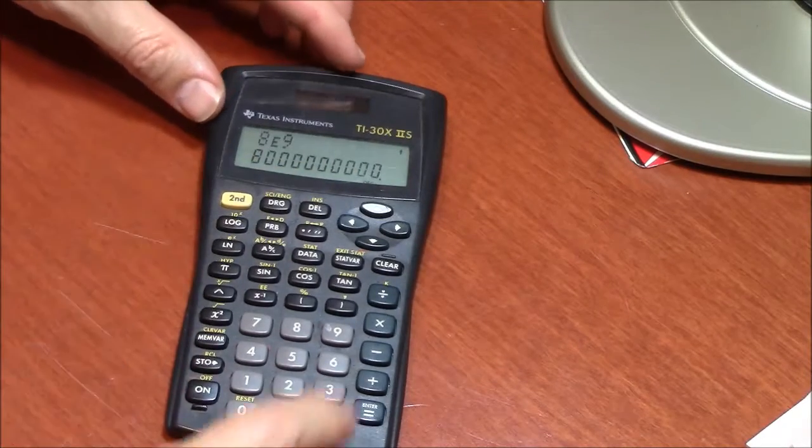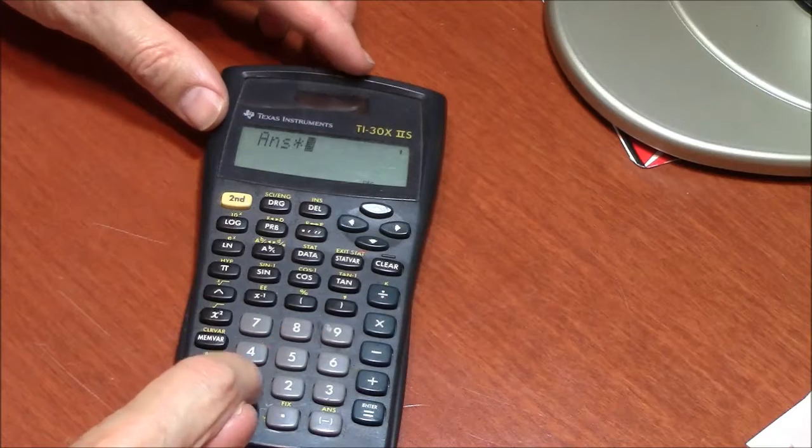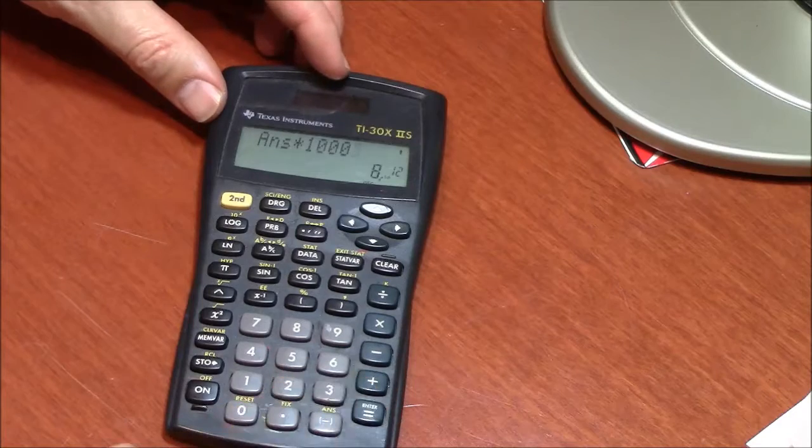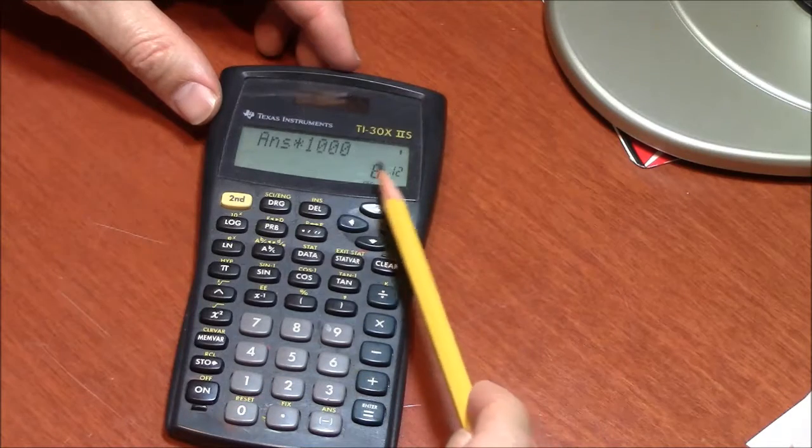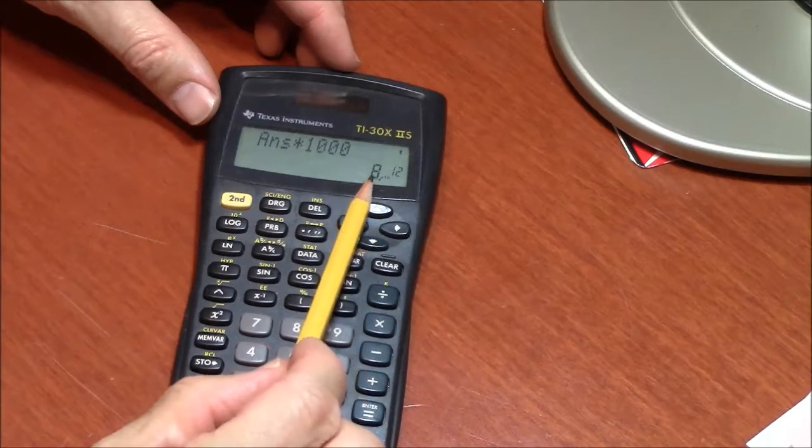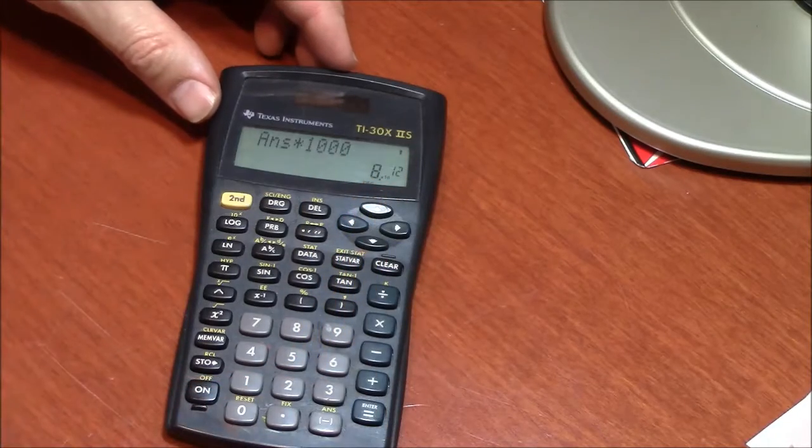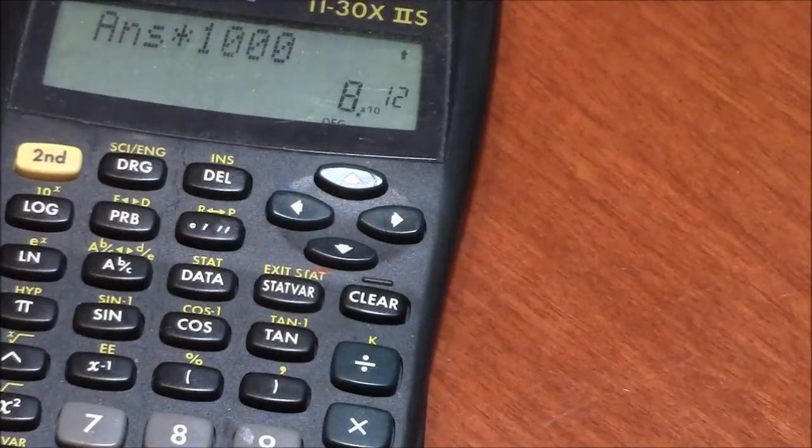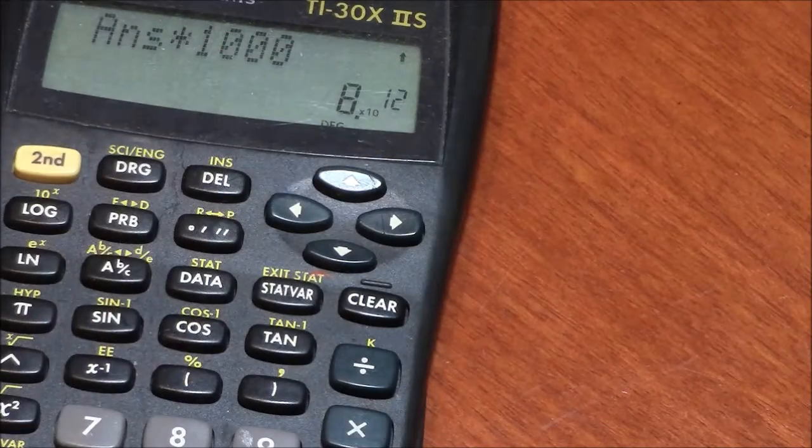If I take that number and multiply it by 1,000, the number won't fit on the screen anymore. It tells me in the corner that 8 times 10 to the ninth times 1,000 is 8 times 10 to the 12th. I'll zoom in to show you that. 8 times 10 to the 12th in fine print.